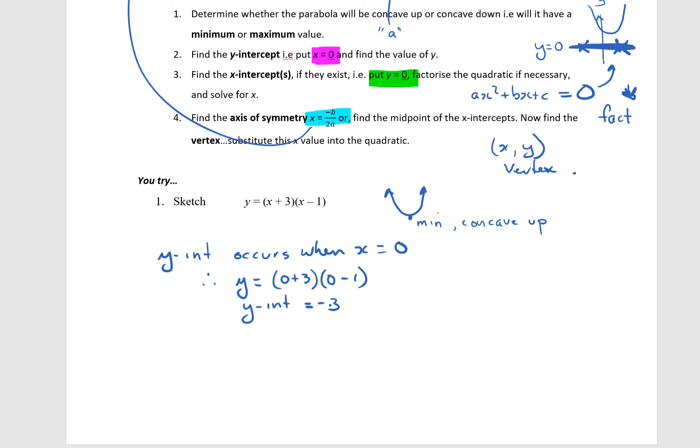The x-intercept occurs when y is 0. Therefore, we want to solve 0 equals x plus 3, x minus 1. See what I mean about the fact that this is a nice question? Because they've already factorised the quadratic for you. This is very easy to find the answer now. Therefore, this bracket could be a 0, so x is minus 3. Or this bracket could be a 0, so x is equal to 1.